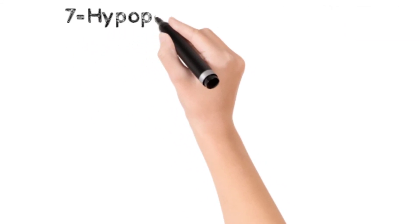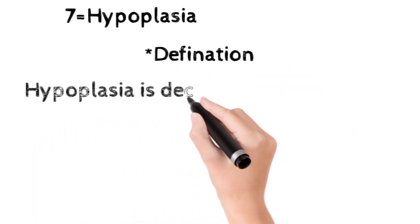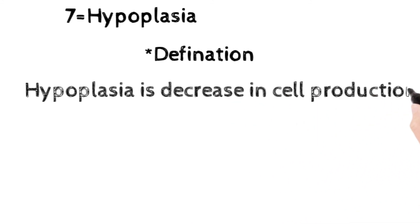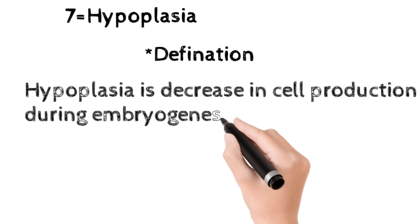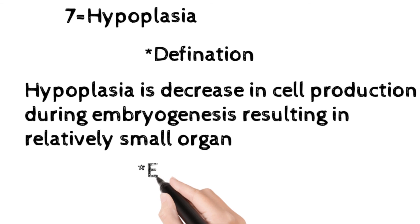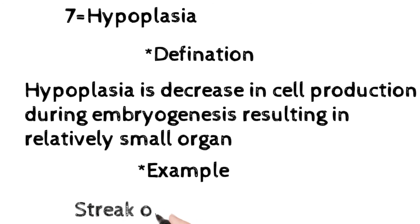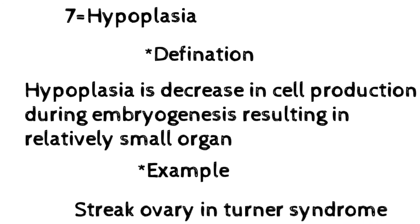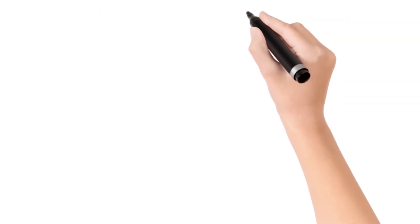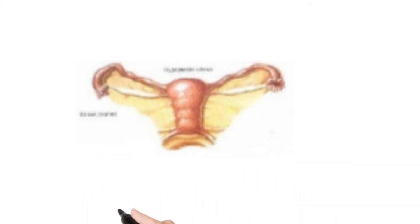The last cellular adaptation is hypoplasia, which means decrease in cell production during embryogenesis. The definition: hypoplasia is the decrease in cell production during embryogenesis resulting in a relatively small organ size. For example, streak ovary in Turner syndrome — there will be a small-sized ovary. The diagram shows a streak ovary in Turner syndrome with a small size of ovary.